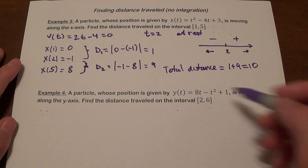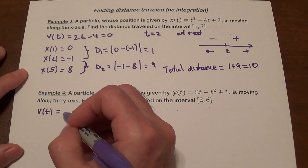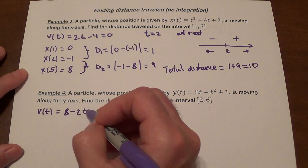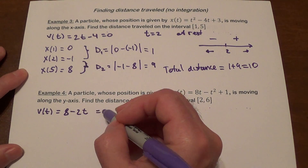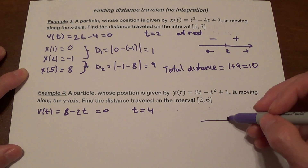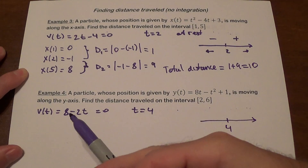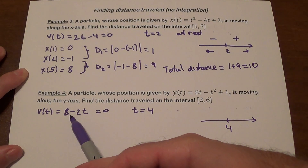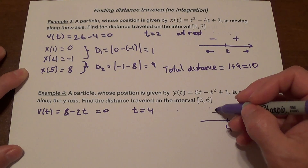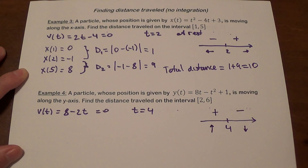Next example: a particle moving along the y-axis with a given position function. The velocity function is 8 - 2t. Setting it equal to 0 gives t = 4. We check for a sign change at t = 4: when t is less than 4, the expression is positive, and when t is greater than 4, it's negative. So the object is moving up then moving down — there is a sign change, which means there is a change in direction.